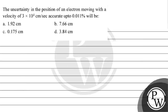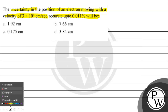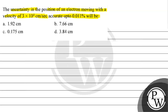Let's read this question. The question says: the uncertainty in the position of an electron moving with a velocity of 3×10⁴ centimeters per second, accurate up to 0.011 percent, will be — option A: 1.92 cm, option B: 7.66 cm, option C: 0.175 cm, option D: 3.84 cm.